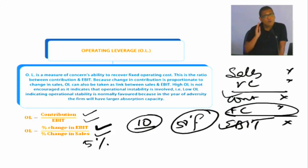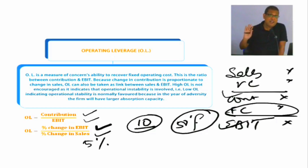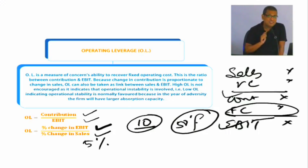So the idea is, high operating leverage is operational instability. Upward moving sales के लिए operating leverage अगर high है, तो कोई problem नहीं है। लेकिन अगर sale is going downward, then high operating leverage is going to kill us. Thank you.